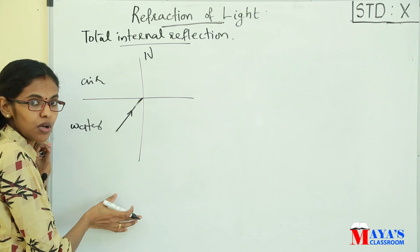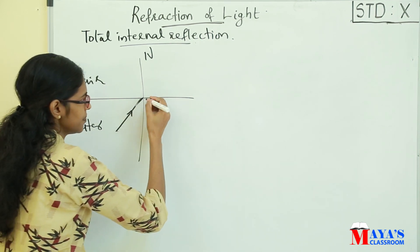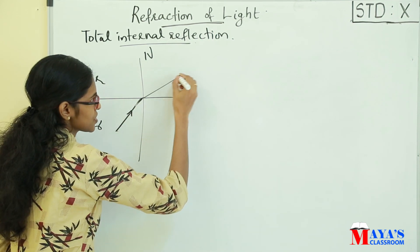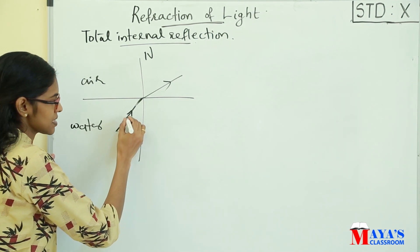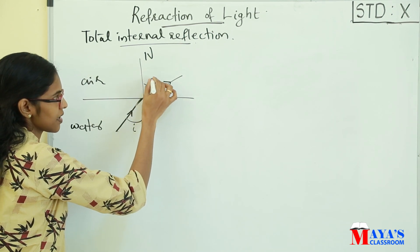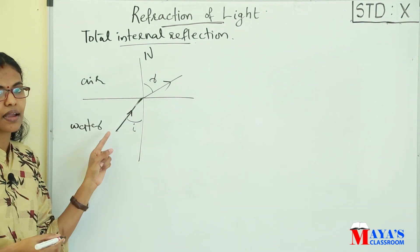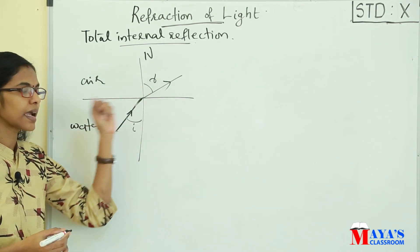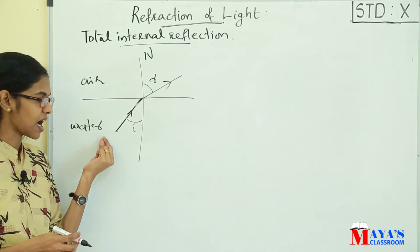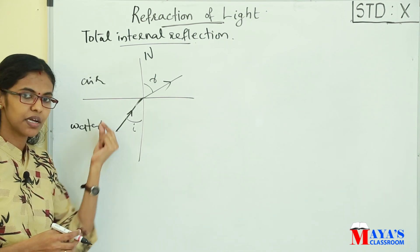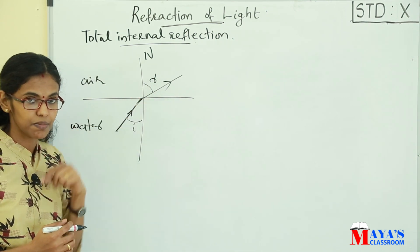The refracted ray is away from the normal. This is the angle of incidence, and this is the angle of refraction. When a ray of light travels from a denser medium to a rarer medium, the refracted ray is away from the normal.